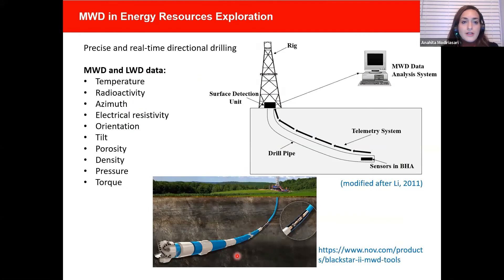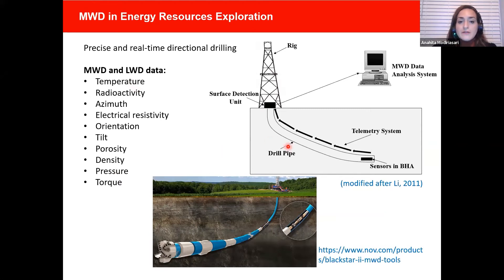MWD was initially used in energy resources exploration for precise and real-time directional drilling. In energy resources, because the drilling depth can be several kilometers, the sensors need to be near the drill bit at the bottom hole assembly, with a transmission system to transfer data to the ground. The system used in energy resources is very complicated and expensive, and we cannot use it for the simple drill rig used in geotechnical engineering.